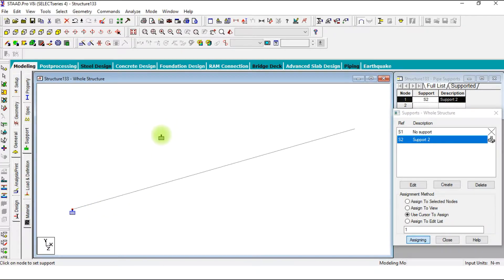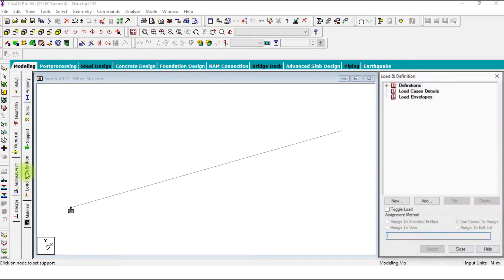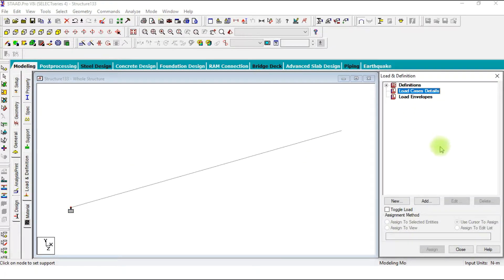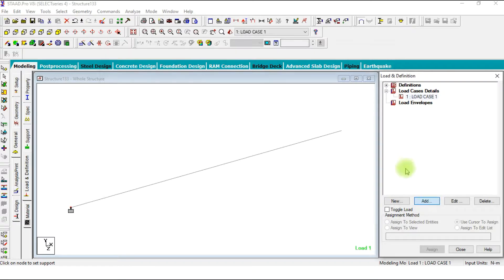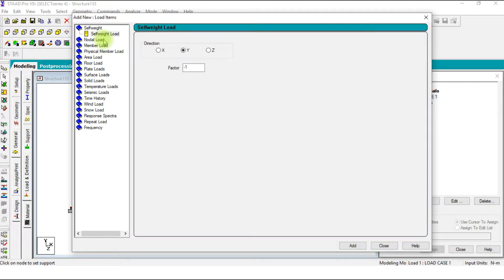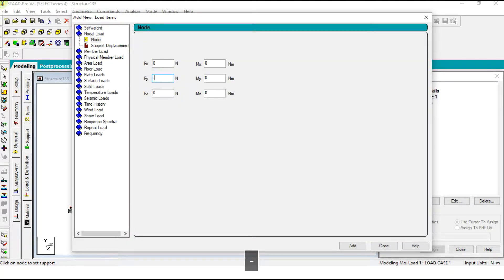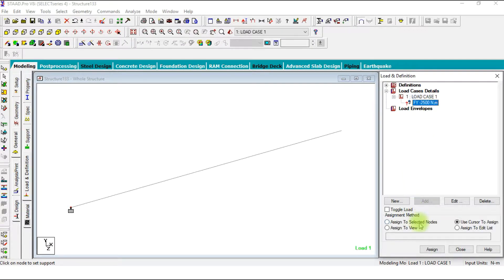Now we are going to add a load of 2500 Newton at the free end. We have to create a load case first, add the dead load case. Then add another load of minus 2500 Newton, use cursor to assign and assign it to the free node.